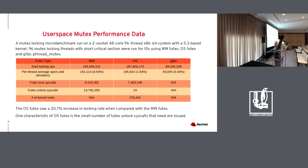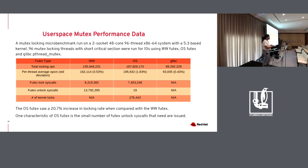The last row in the table shows the number of locks actually acquired in the kernel itself. My current sample implementation of the OS futex does four user-space lock attempts before switching to kernel locking. In the kernel, after a certain period it forces a lock handoff to prevent lock starvation.